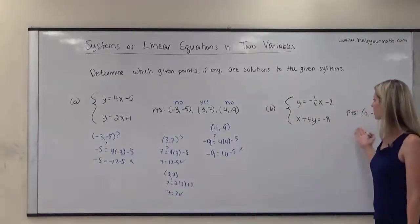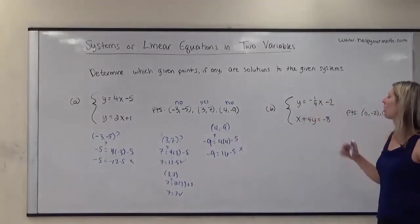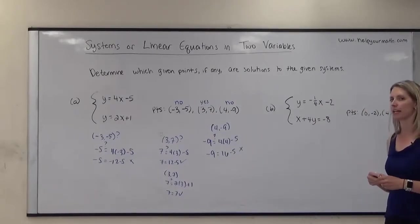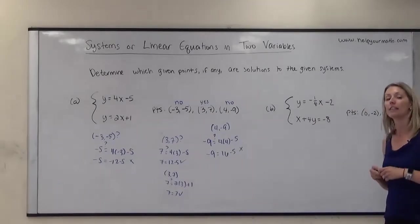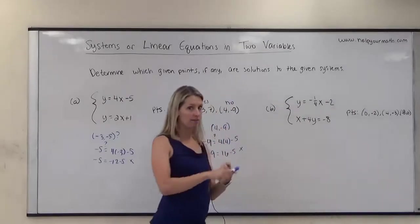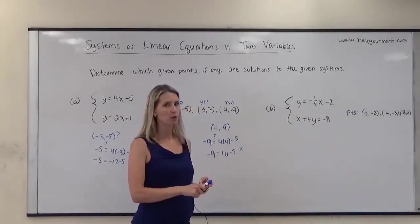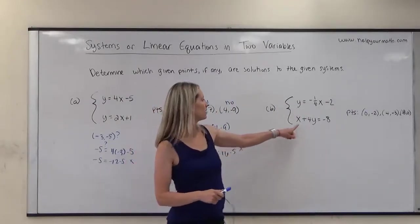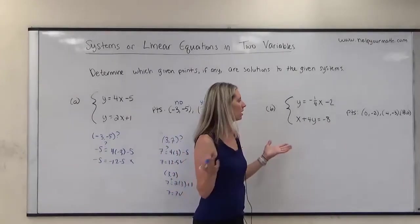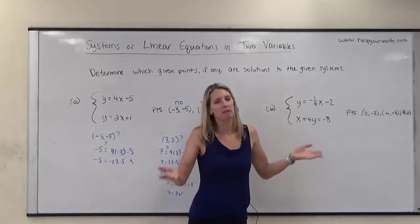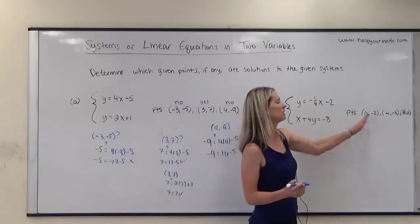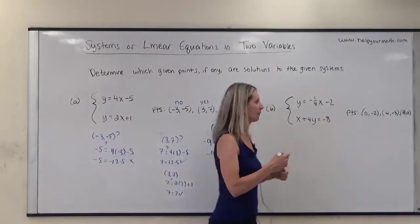Moving on to our next system of equations: y equals negative one-fourth x minus 2, and x plus 4y equals negative 8. In this particular system, we're not sure whether there are infinitely many solutions, no solution, or one solution, because the second equation is not written in slope-intercept form. We could rewrite it, but for this exercise it doesn't really matter — we're just plugging in points to see if they work.